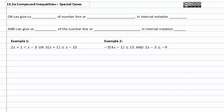Depending on the situation with compound inequalities, OR can give us all of the number line or all real numbers when we graph. In interval notation, it would be negative infinity to positive infinity.